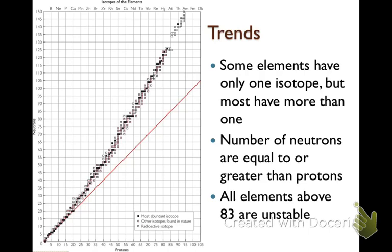So if you take a look at 83 above here, we have some unstable ones right over there. And when they're unstable, they're going to decay, meaning they're going to release protons and neutrons.